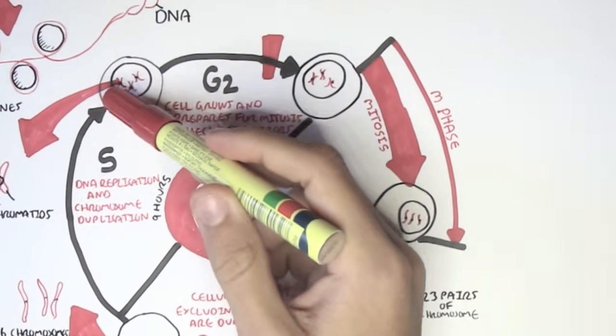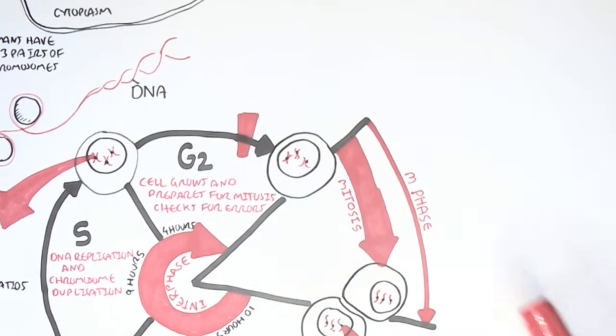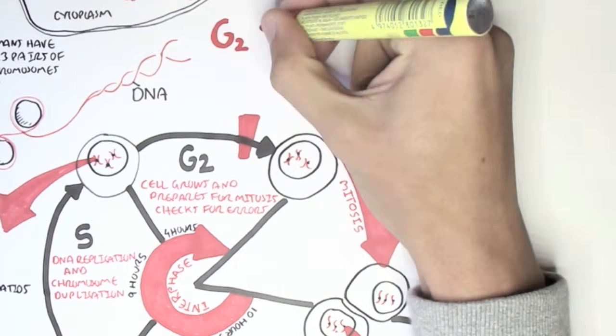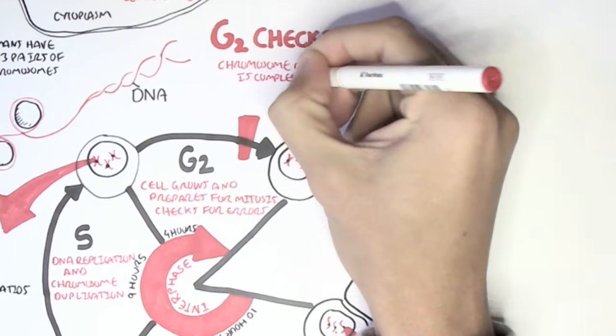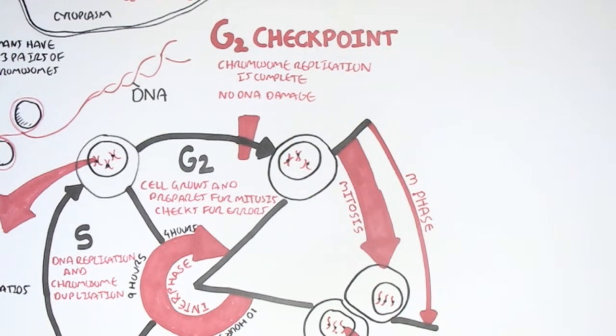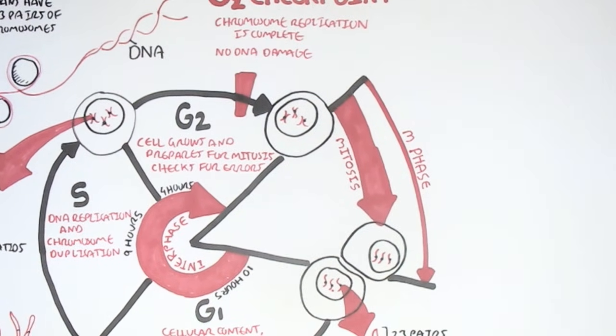Then the cell will enter the G2 phase. But before finishing the G2 phase, there is another checkpoint called the G2 checkpoint, where the cell will check if chromosome replication is complete and that there is no DNA damage. Once that's okay, the cell will enter the M phase, it will enter mitosis, where the cell with 46 chromosomes and 92 chromatids will divide to produce two daughter cells, two identical cells, with 46 chromosomes and 46 chromatids each.